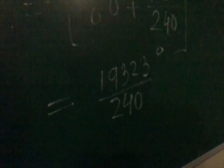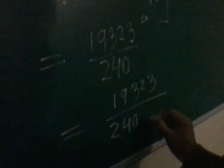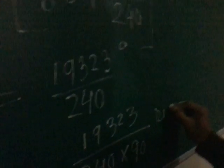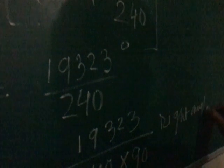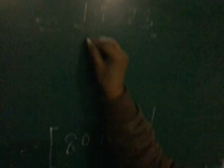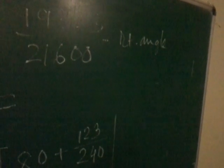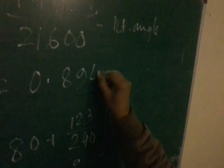That means 90 degree is equal to 1 right angle. We know that 90 degree is equal to 1 right angle. So dividing by 90, we will get 19323 divided by 240 into 90, which gives 19323 divided by 21600 right angle. So 80 degree 30 minute 45 second equals 0.8945 right angle.